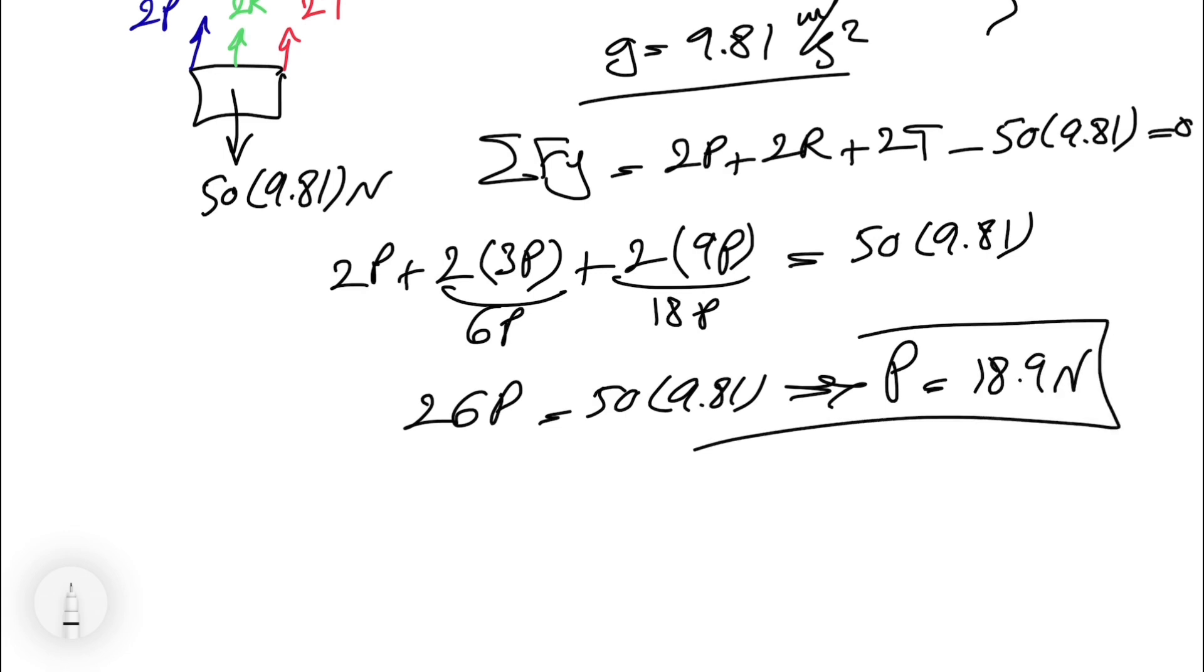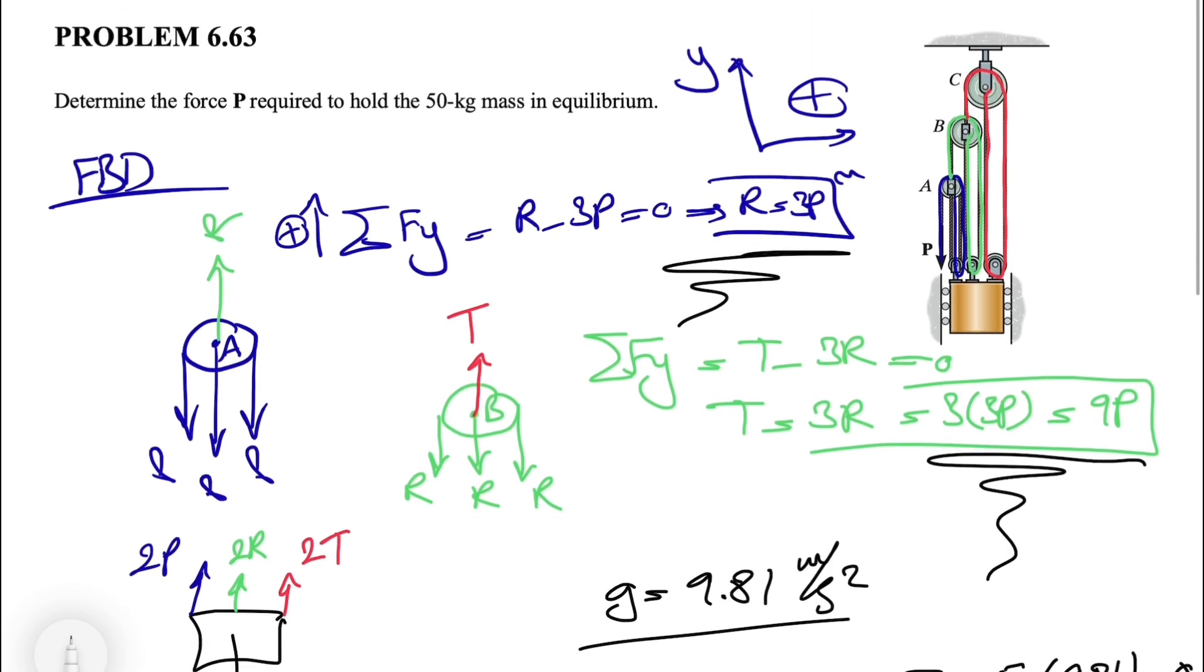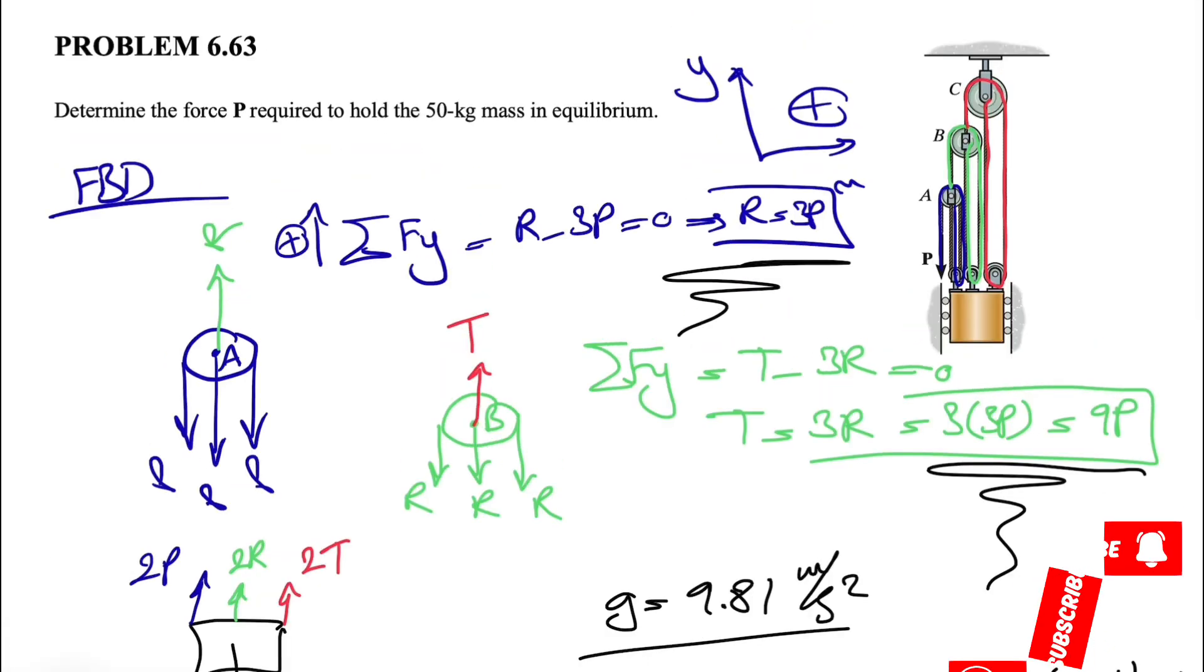That would be the final answer. The main part of this question is figuring out that we have 3 different cables that they have 3 different tensions. And we know that in each single cable, we have the same tension everywhere of that specific cable. And once we figure out that, we only have forces in Y direction, and we're good to go to find the force P at the end. That would be the answer for this question.